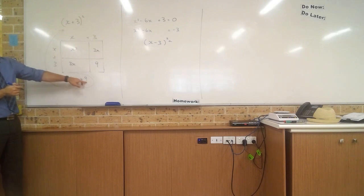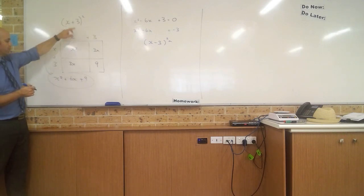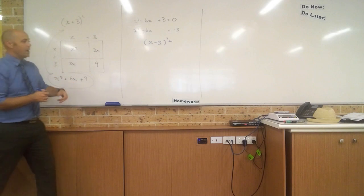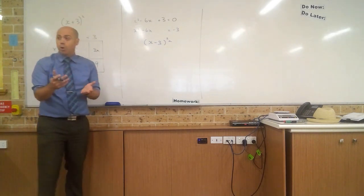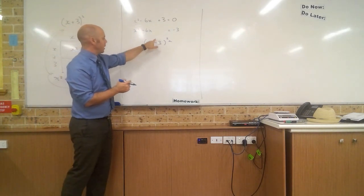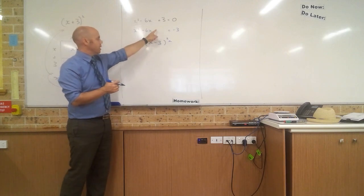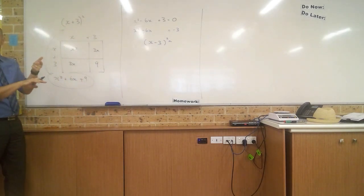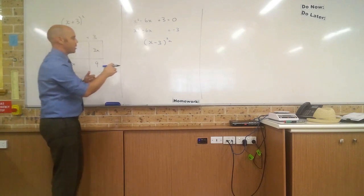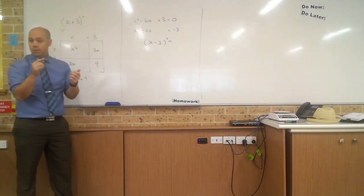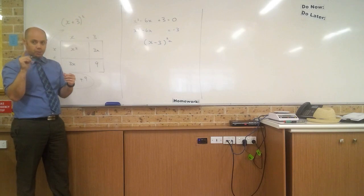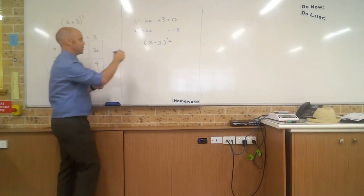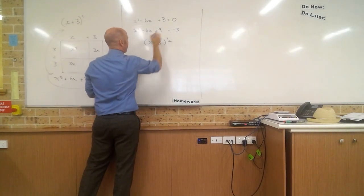To get the number, so we took half of this number and squared it. We took the number that was half of this, I should say, squared it to get this constant here. And so we're going to do the same again to make a perfect square. We need to get this number here and square it and put it in here to form an expression that can factorize to a perfect square. So minus 3 squared is... Aaron? Positive 9. That's right. Positive 9.